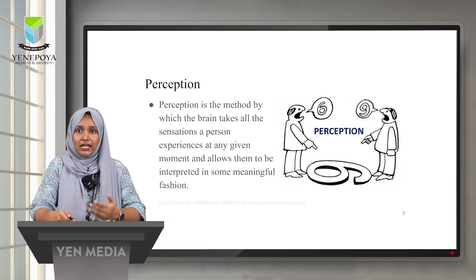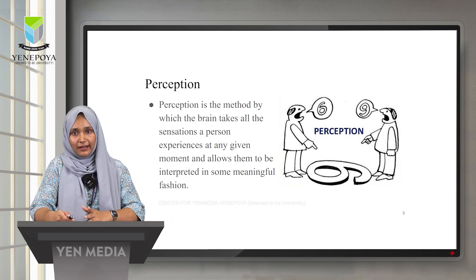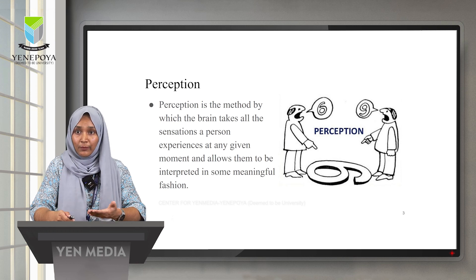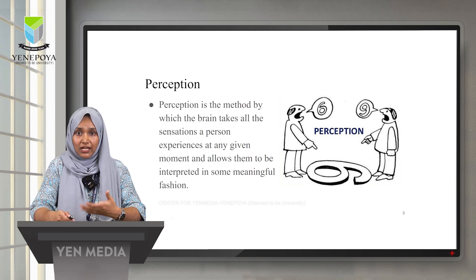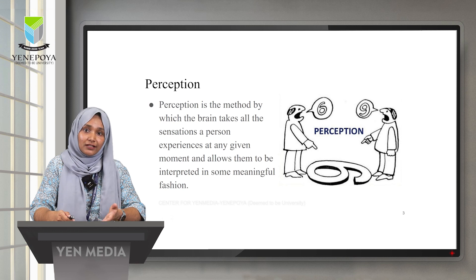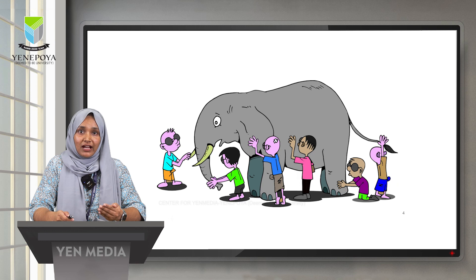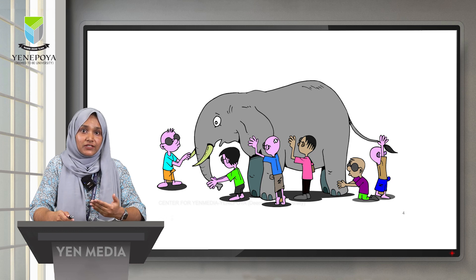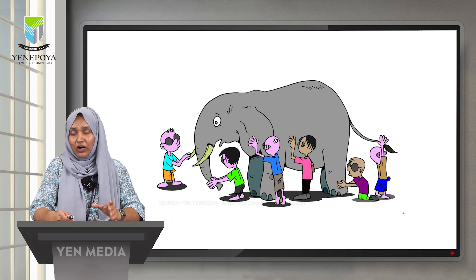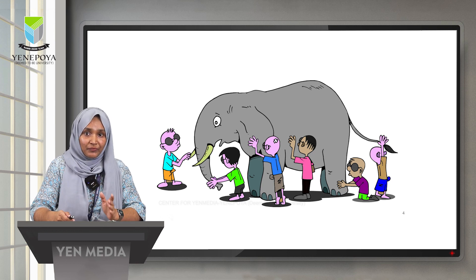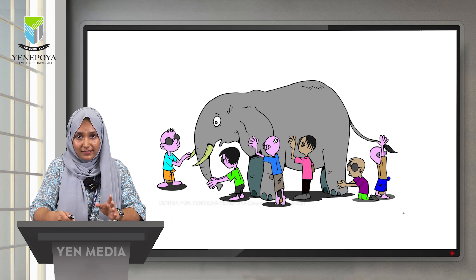In this figure, you can see that one person perceives the number as six and another person perceives it as nine — both are right from their point of view. Perception is very subjective; that doesn't mean one is wrong and the other is right. Similarly, in the blind men and elephant example, all those people perceive the elephant from different aspects — one the trunk, another the tail, another the leg — and all of them are right from their perspective. It's all about perception.